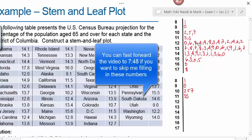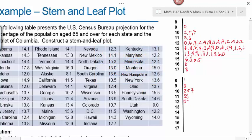For stem 12, arrange the leaves in order from least to greatest: 0, 2, 2, 3, 4, 4, 4, 4, 6, 6, 7, 8, 8.